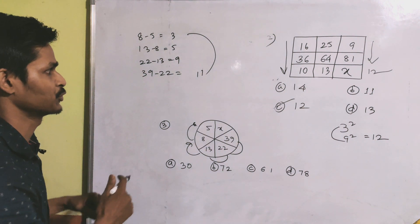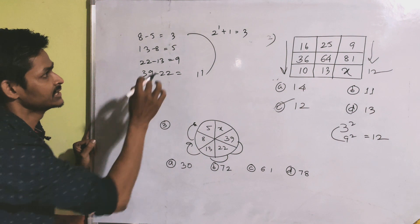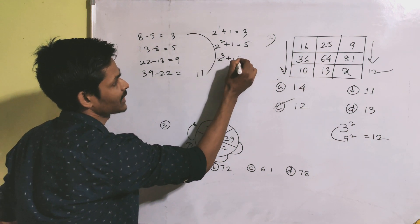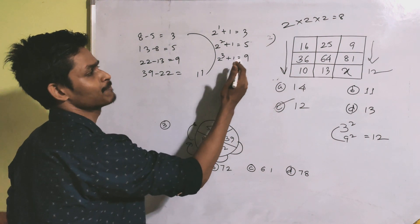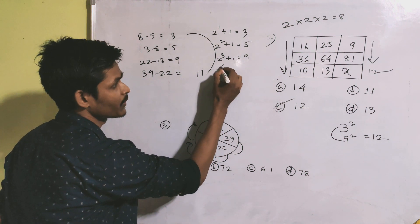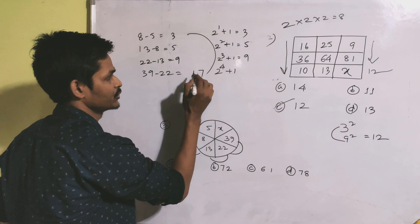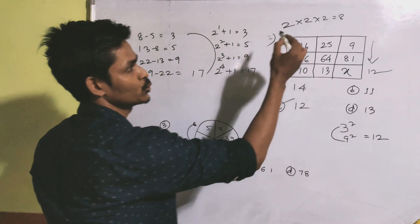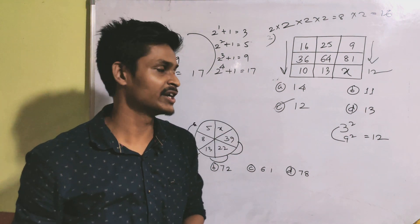The pattern is powers of 2 plus 1: 2 to the power 1 plus 1 is 3; 2 squared plus 1 is 5; 2 cubed plus 1 is 9 (since 2×2×2=8, and 8 plus 1 is 9); 2 to the power 4 plus 1 is 17 (since 2 to the power 4 is 16, and 16 plus 1 is 17).